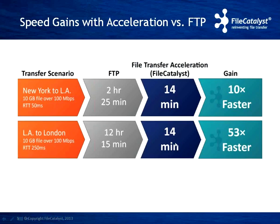Here are some speed gains you'd normally see with FileCatalyst. In a transfer from New York to LA — within continental US, latency of 50ms — a 10GB file over a 100Mbps link takes about two and a half hours with FTP. With FileCatalyst, it takes 14 minutes. That's roughly a 10 times improvement.